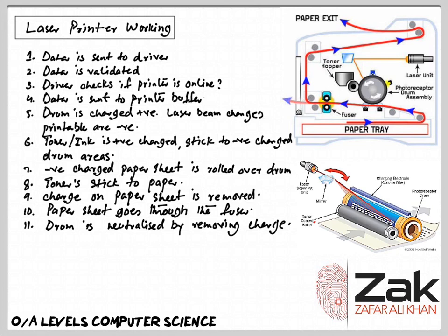A discharge lamp removes the electric charge from the drum so it is ready to print the next page. That is how the whole laser printing process happens.